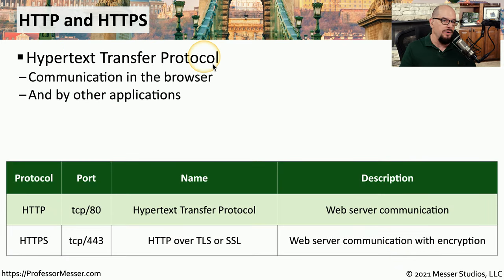If you've ever worked in a help desk, you've probably used some type of remote access software to see the desktop of a remote computer. The Windows operating system uses Remote Desktop Protocol, or RDP, to provide that shared desktop view, and it commonly communicates using TCP port 3389. You can enable the remote desktop service on a Windows computer to allow others to view your desktop or perhaps a single application, and they can do so from many different operating systems including macOS, iOS, and Android.